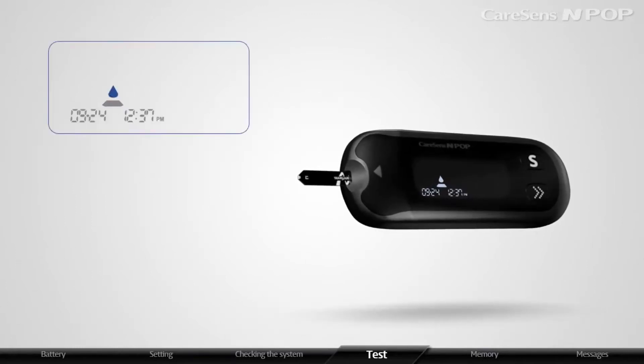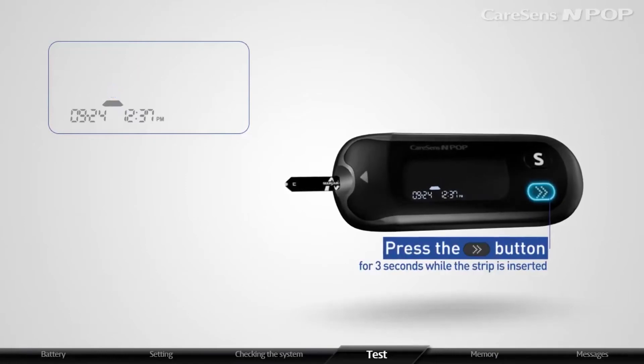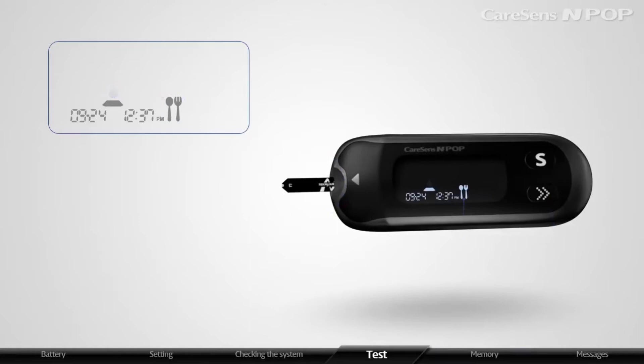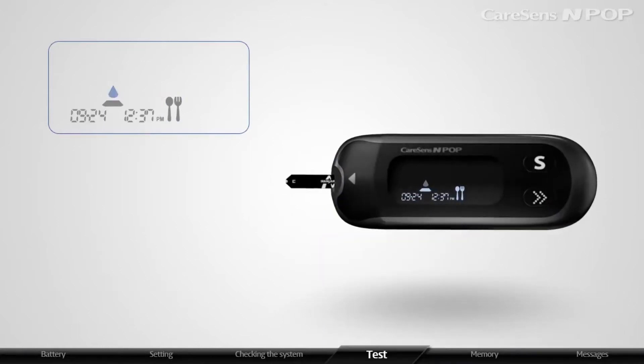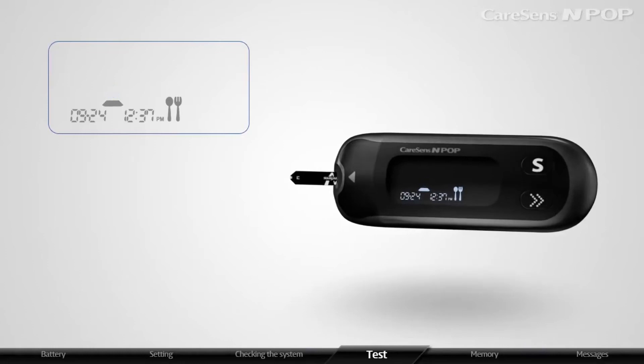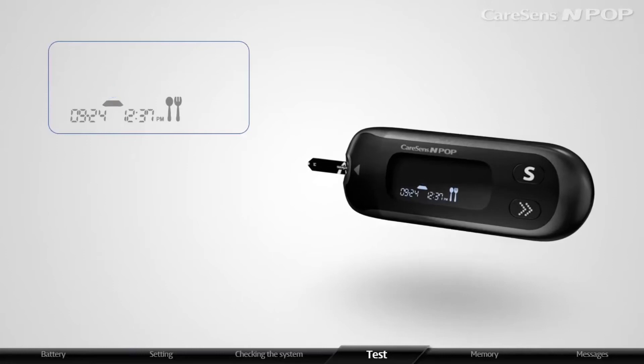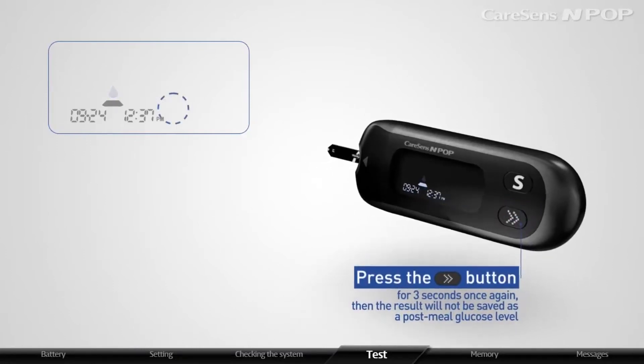In order to save test result as a post-meal glucose level, press the arrow button for 3 seconds while the strip is inserted. Post-meal test result is viewed with a post-meal flag. If you do not want to save the test result as a post-meal glucose level, press the arrow button for 3 seconds once again.